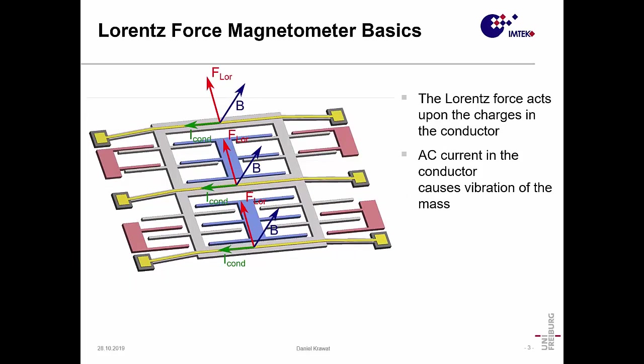If you apply a current on these conductors and we have a magnetic field, for example in this direction, then a Lorentz-Force will act on this structure and deflect it. This deflection we can measure, for example with these blue electrodes.